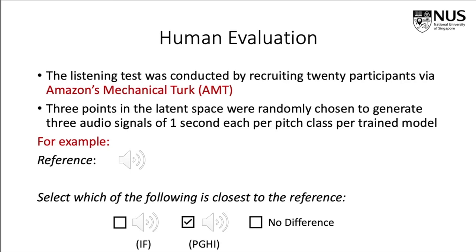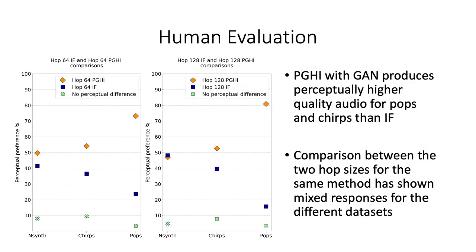Quantitatively, we observed that with the IF method, the sharp transients of the pop and chirp sounds get smeared in time, whereas the PGHI method produces clear and sharp transients. This smearing effect occurs because of IF's inability to provide robust phase estimation when the signal contains closely spaced wideband frequency components. For NSynth data, the two methods sound approximately similar in quality. For both hop sizes, participants rated PGHI audio clips significantly better than IF for pop and chirp sounds, while PGHI and IF were similarly rated for pitched instrument sounds. Comparison between the two hop sizes showed mixed responses, indicating that more than 75% redundancy between consecutive frames may not have a significant impact on reconstructed audio quality.